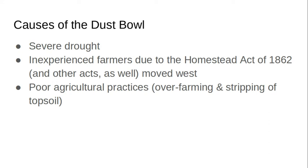After the Homestead Act of 1862, they also passed the Kincaid Act of 1904 and the Enlarged Homestead Act of 1909. So you have these large groups of inexperienced farmers moving into the area, and they also came with poor, unskilled or uneducated agricultural practices. Many of them were over-farming with the invention of the plow and pretty much clear-cutting the entire breadbasket.